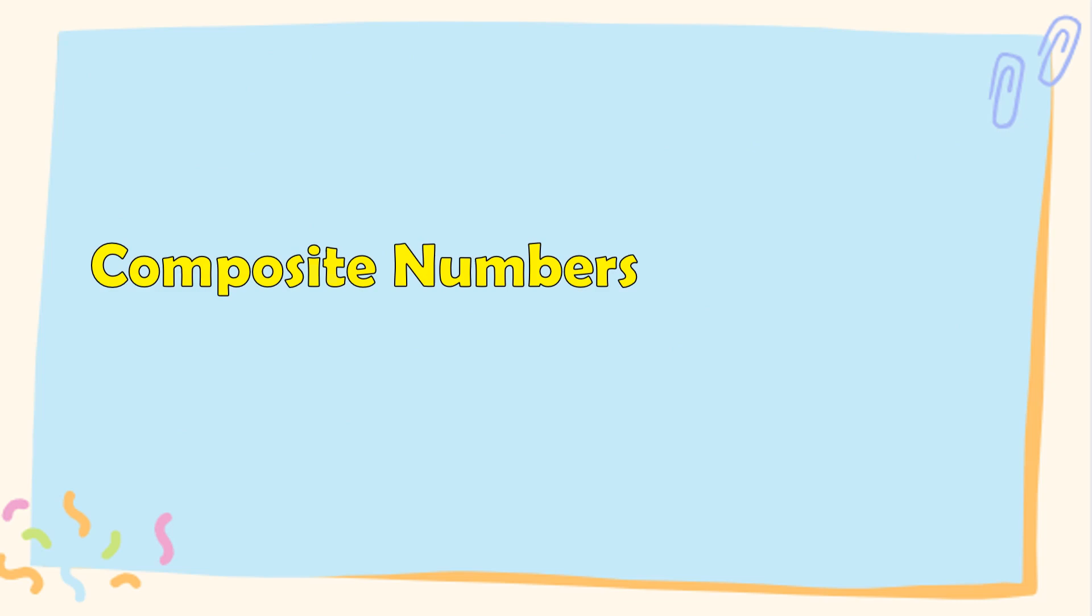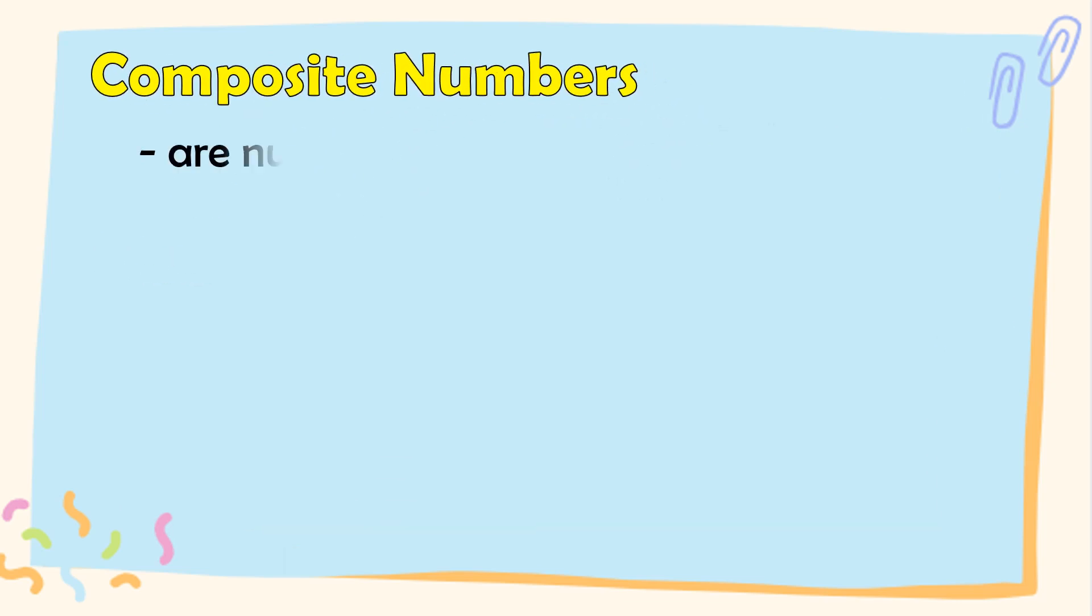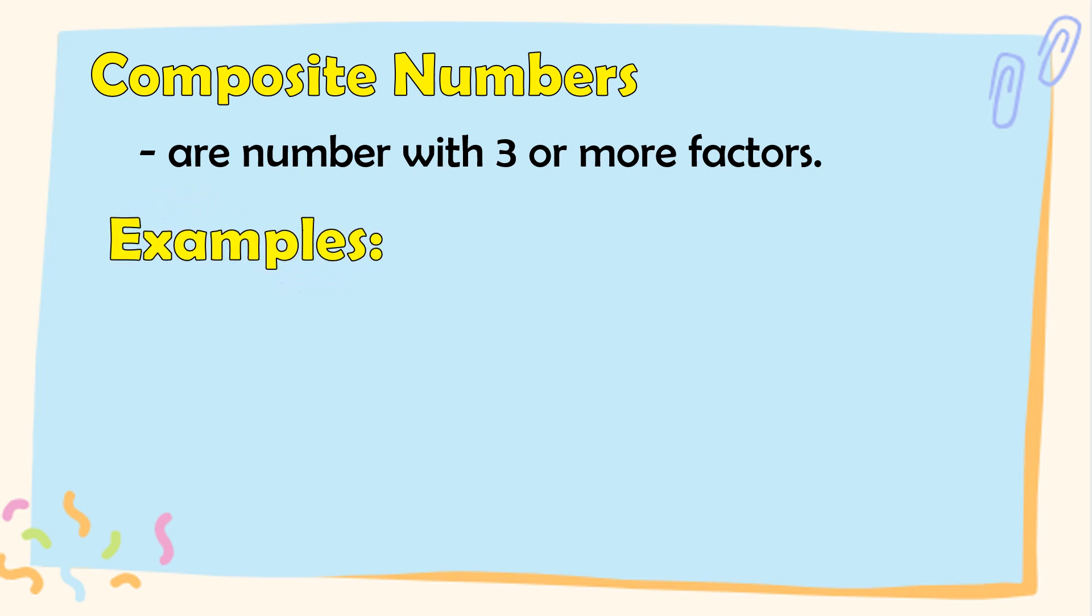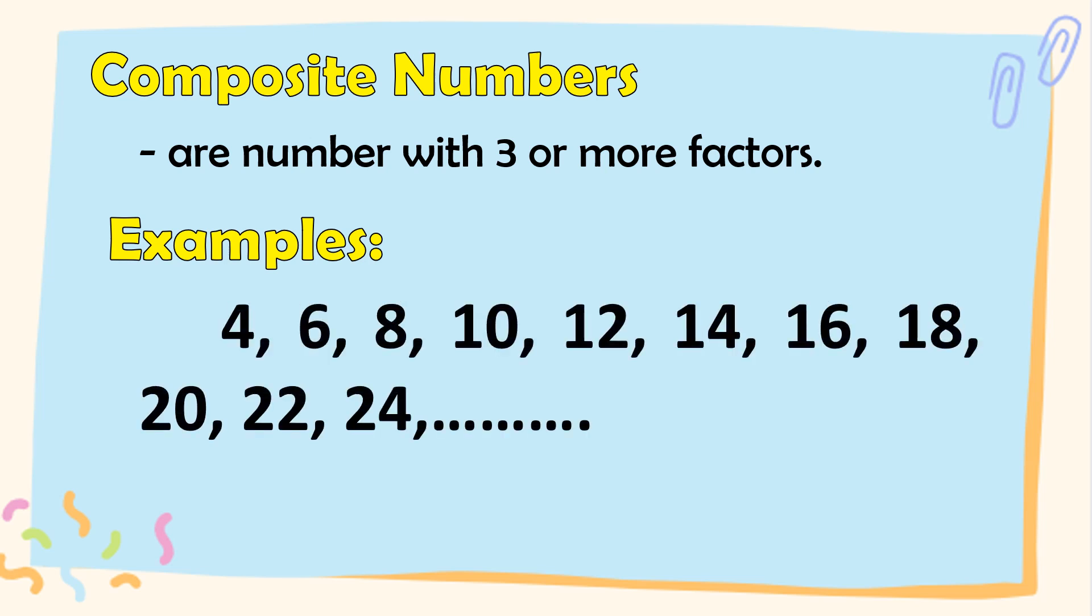When we say composite numbers, these are numbers with 3 or more factors. Kung yun yung napansin din kanina, yung 18 at 15, ang factors nila ay mayroong 6 at mayroong ding 4. So, here are other examples of composite numbers. We have 4, 6, 8, 10, 12, 14, 16, 18, 20, 22, 24, and so forth.